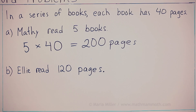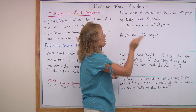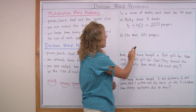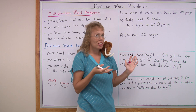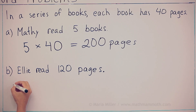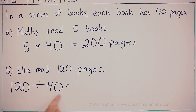Ellie read 120 pages. She read those same kinds of books. She read so many books, but we don't know how many. So we will ask how many books did she read? To answer that question, we can write a division: 120 divided by 40. And if those numbers look big to you, it's still an easy division — just think: how many 40s are in 120? The answer is three.